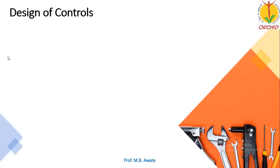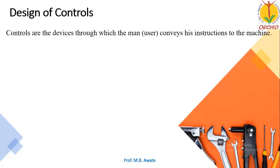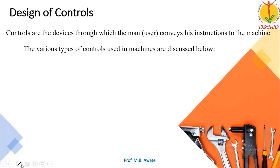Hello everyone. In the last session we have seen design of displays. Now we will deal with design of controls. For that we will first see what controls are. Controls are the devices through which a man or a user conveys his instructions to the machine. There are various types of controls which are used in machines.